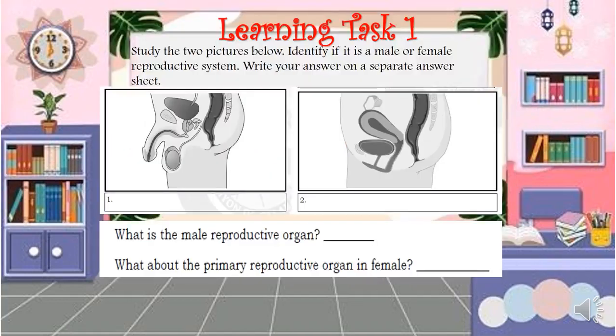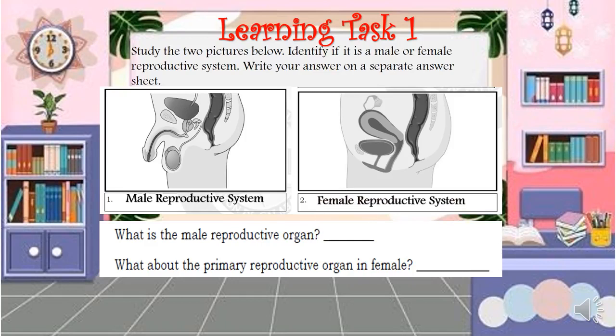Now let us answer Learning Task 1. Study the two pictures and identify if each is a male or female reproductive system. Write your answer on a sheet of paper. The first picture is the male reproductive system, and the second one is the female reproductive system.